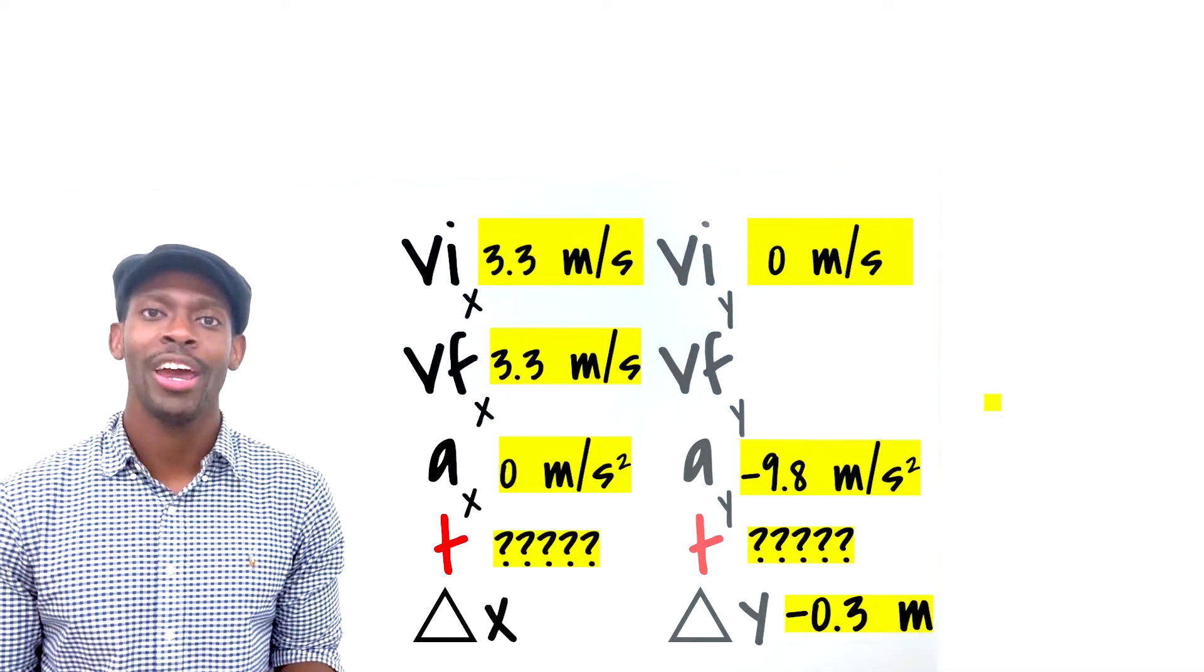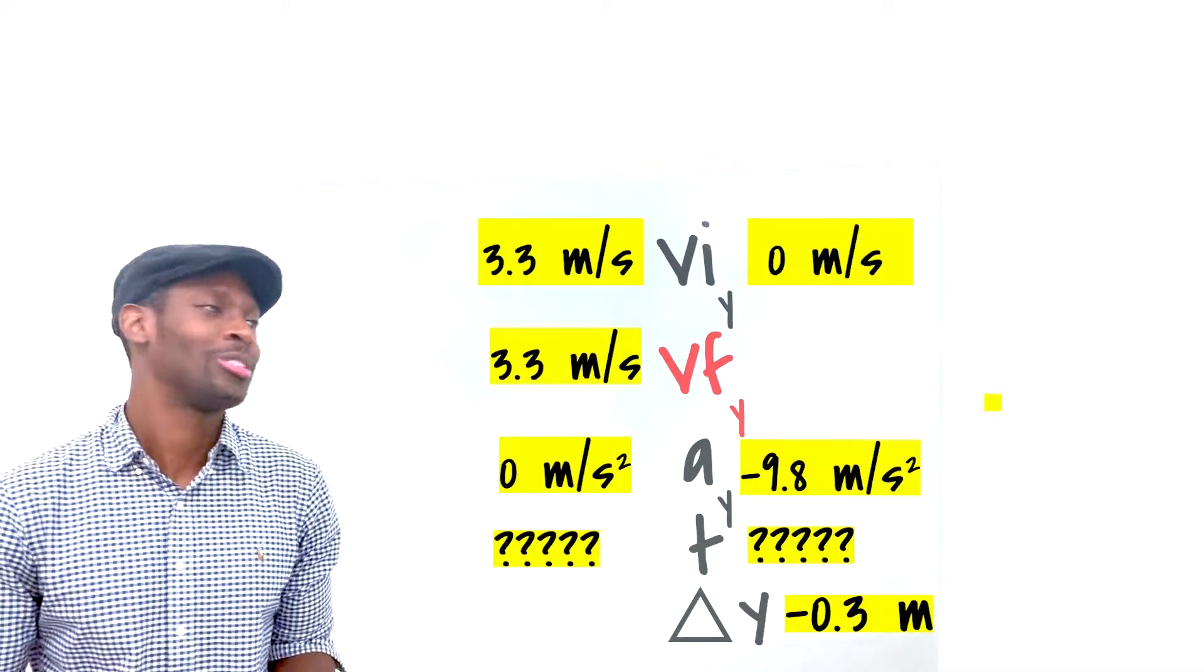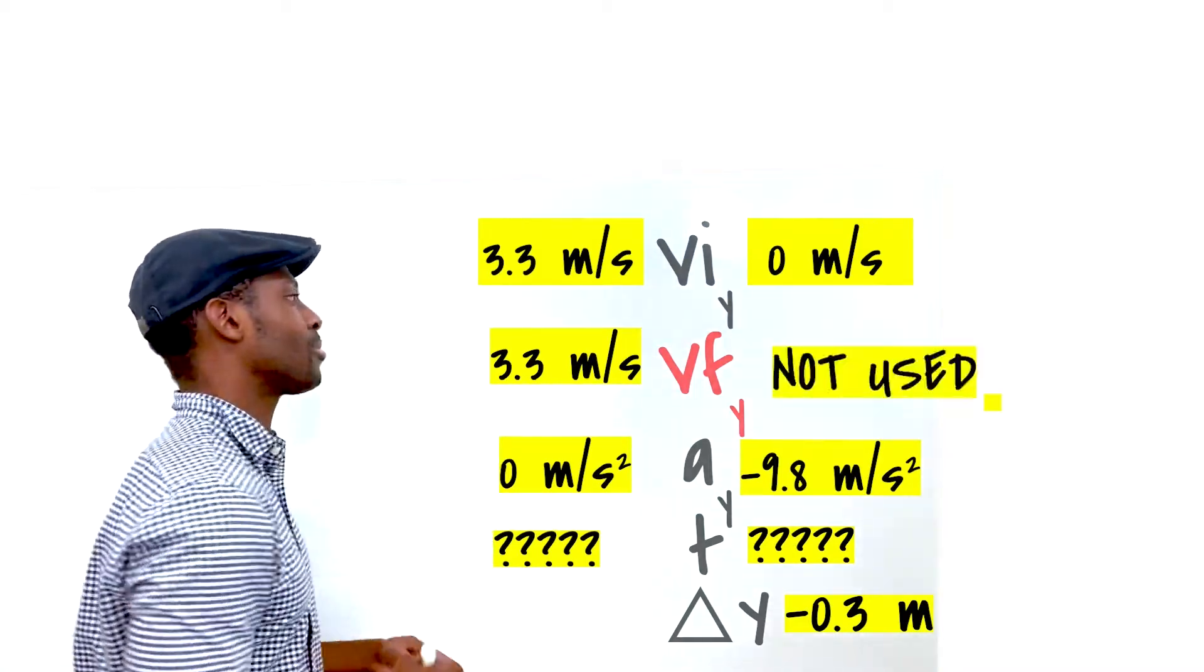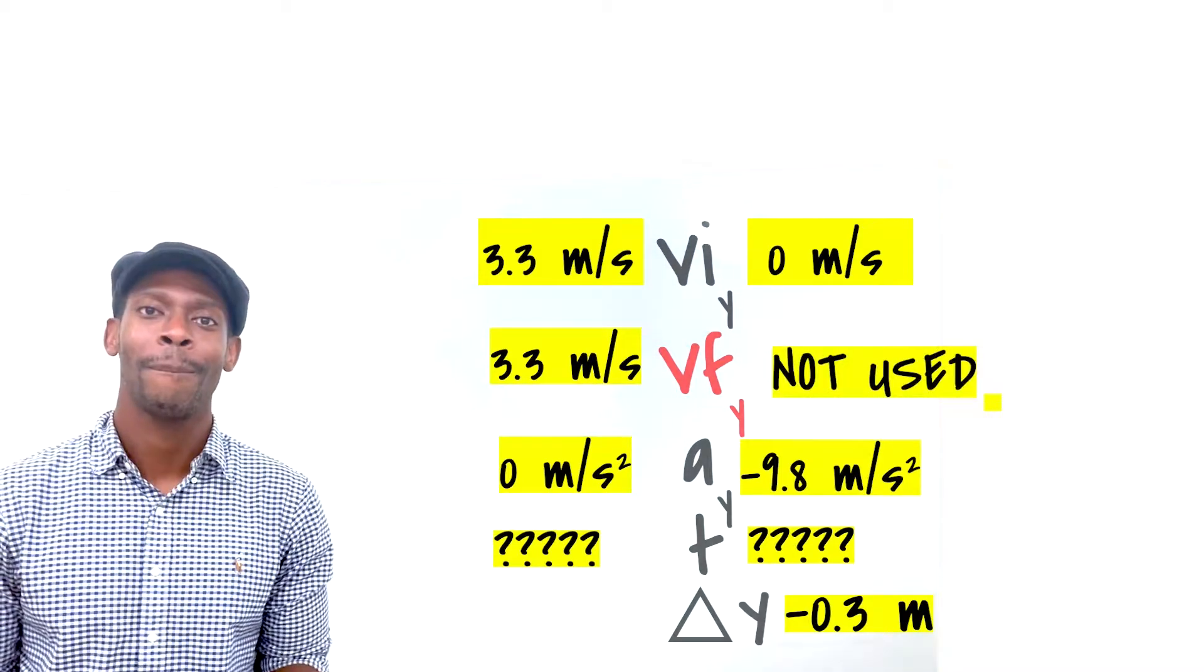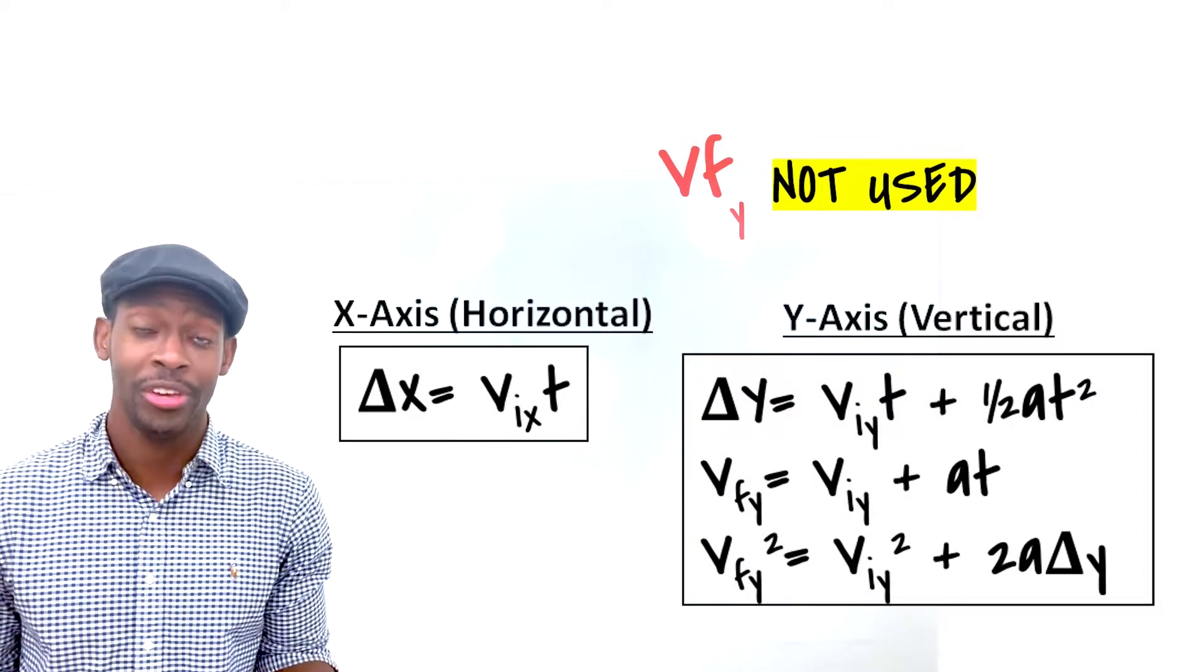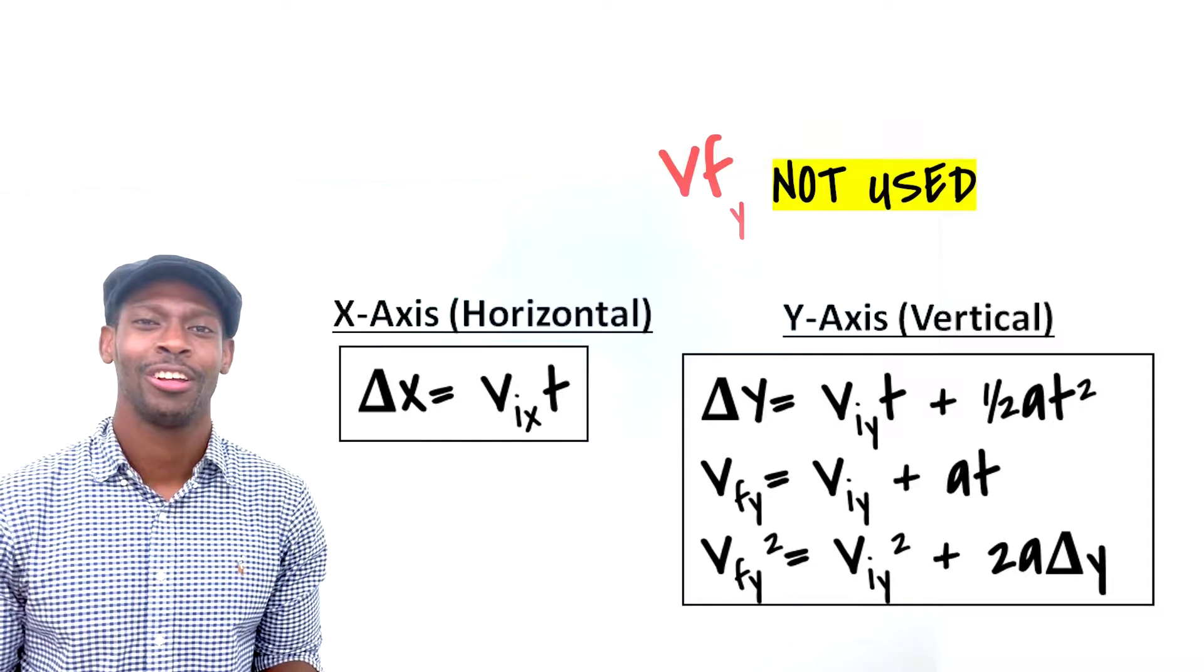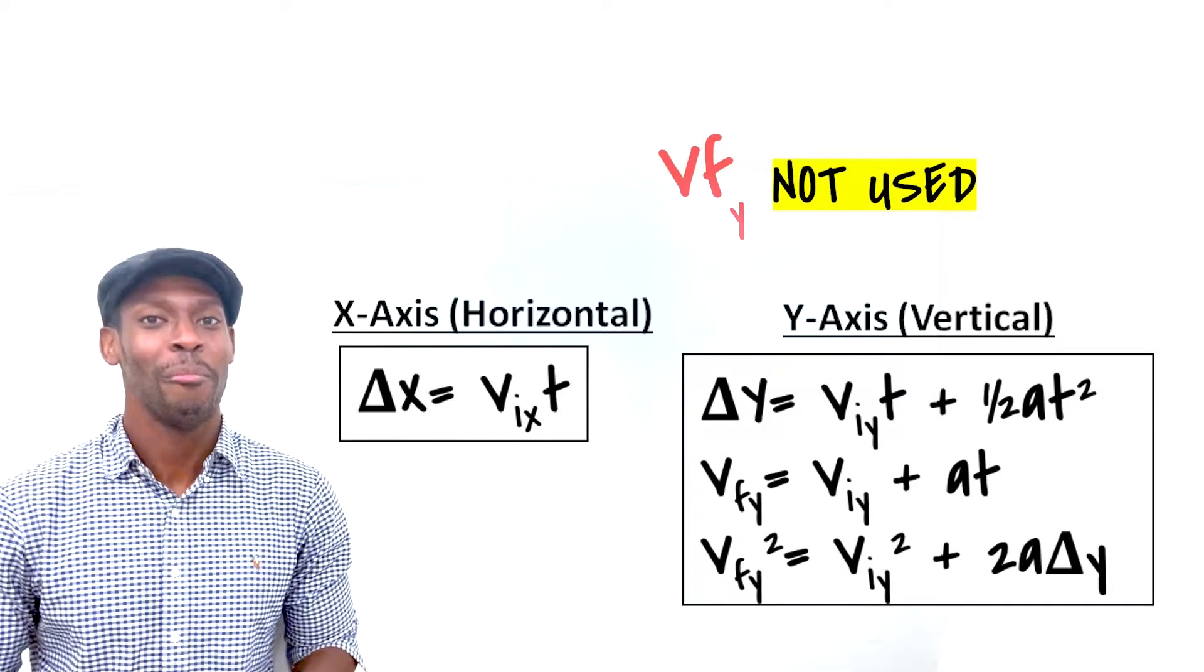And now we only have the final velocity on the y-axis remaining. Do you remember what to do? It's not used. There are more. Let's pick an equation that does not have vfy in it. Which one do you see? Ah, my favorite one.